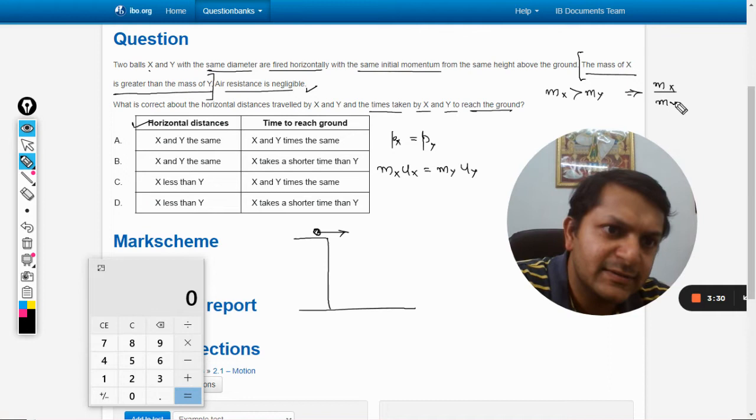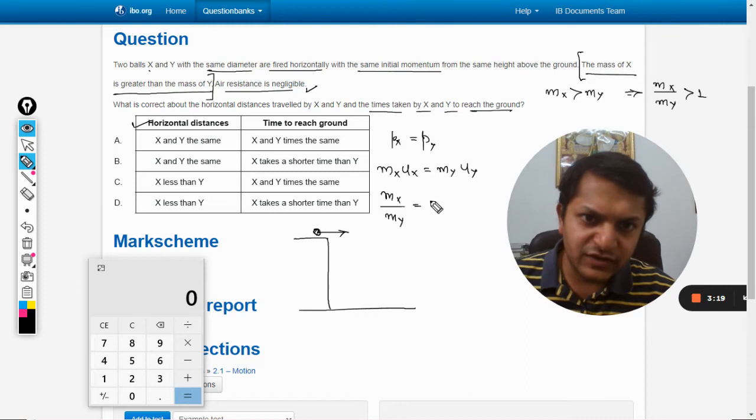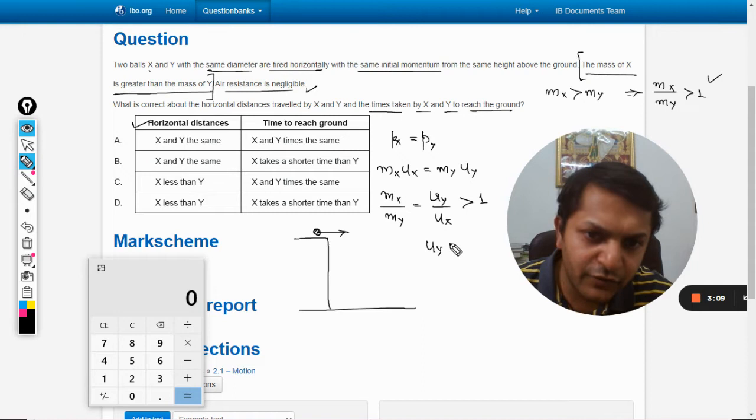In the second statement here it is written that the mass of X is greater than mass of Y. So this means that the ratio mx by my will be greater than one. And from this, our second equation, we will see mx divided by my is equal to uy divided by ux, and this will be greater than one.